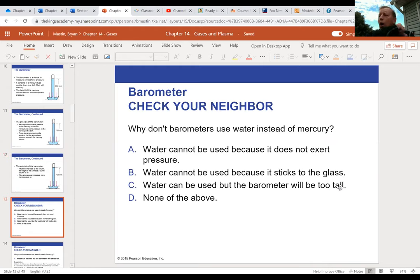So, why don't we use water instead of mercury? Well, water does exert pressure. Water can't be used because it sticks to glass. Well, even mercury sticks to glass. Last chapter, we talked about cohesion, adhesion. So, water can be used. Sure, it can.